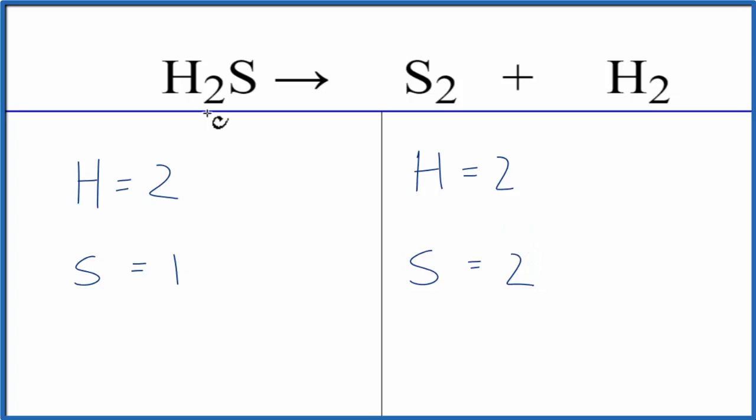So let's change the coefficients, these numbers in front, to balance the equation. If we have two sulfurs here, we're going to have to put a coefficient of two in front of the H2S. And this two applies to everything. So two hydrogens times the two, that gives us four. Sulfurs, the one times the two, that'll give us two of those.